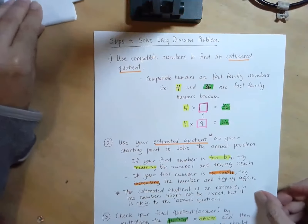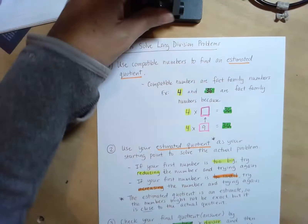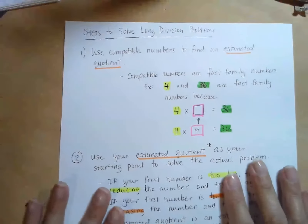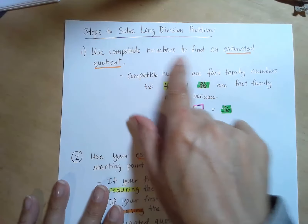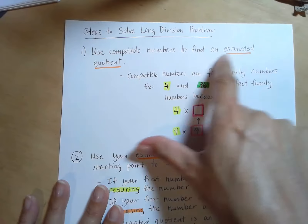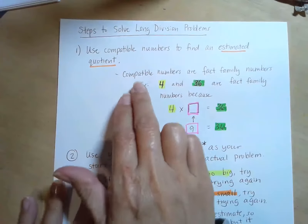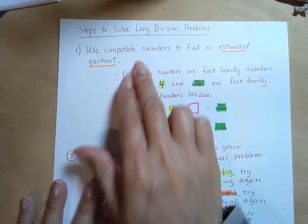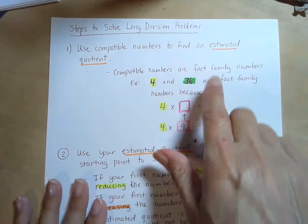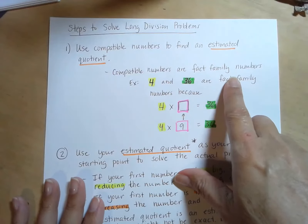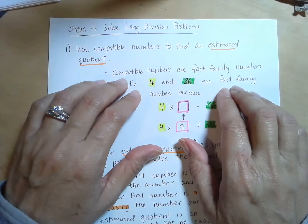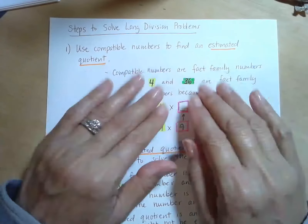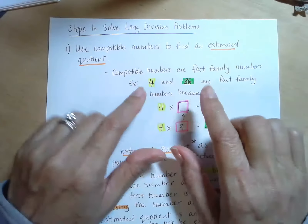I have written this up. If you don't need these steps, you can fast forward, but this is my thinking to solve these kinds of problems. Steps to solve long division problems: you always want to begin using compatible numbers to find your estimated quotient or answer. Compatible numbers are basically fact family numbers. You need to be familiar with your multiplication and division facts. If you don't know your multiplication facts, you will need to use your multiplication chart.